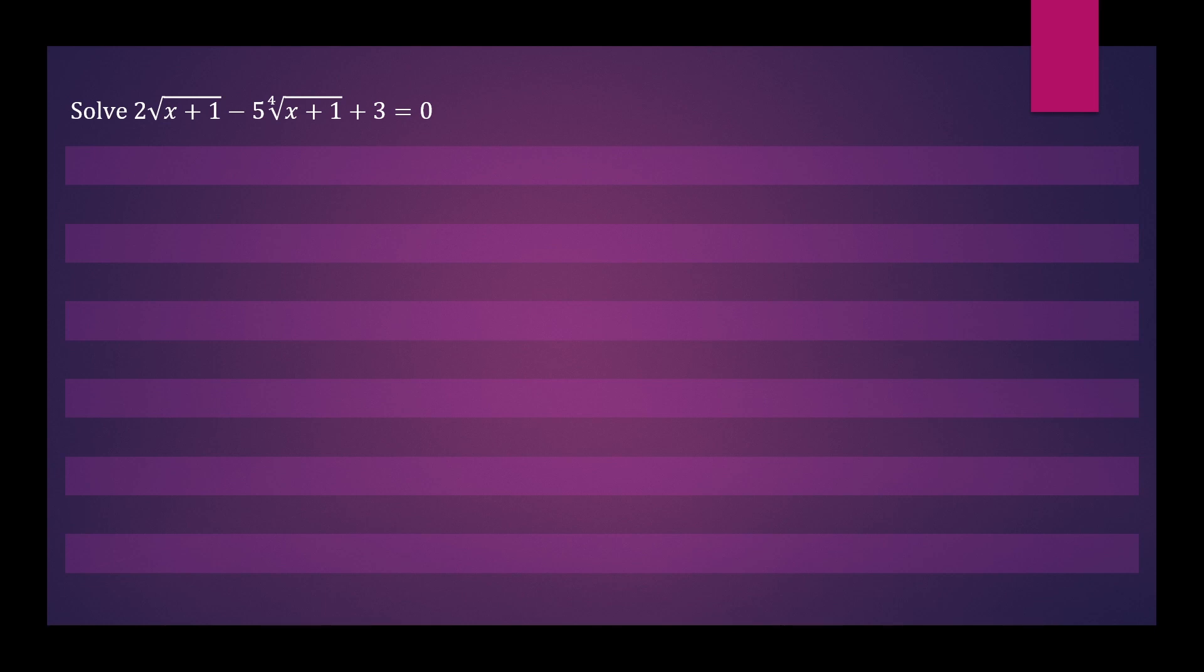I can recommend the first step is removing the radical signs and writing the expressions in index form. That would give us 2 times x plus 1 to the half power minus 5 times x plus 1 to the quarter power plus 3 equals 0.